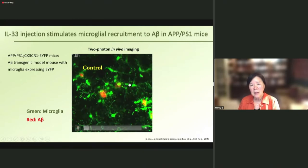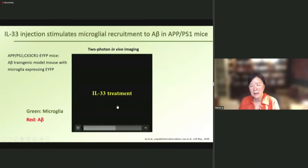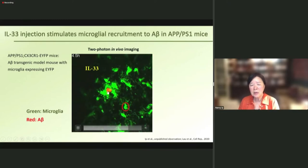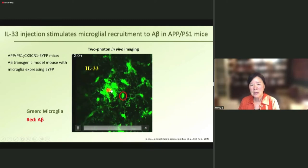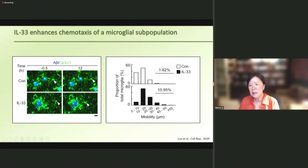We generated APPPS1-63-CR1-EFP mice to label the microglia, and used two-photon in vivo imaging to visualize their phenotypic changes. Microglia are labeled in green and A-beta in red. Under control conditions the microglia are relatively stationary, but after IL-33 treatment, the microglia start to migrate towards the plaque. After 12 hours, there is a significant increase in the percentage of microglia with higher mobility following IL-33 injection.